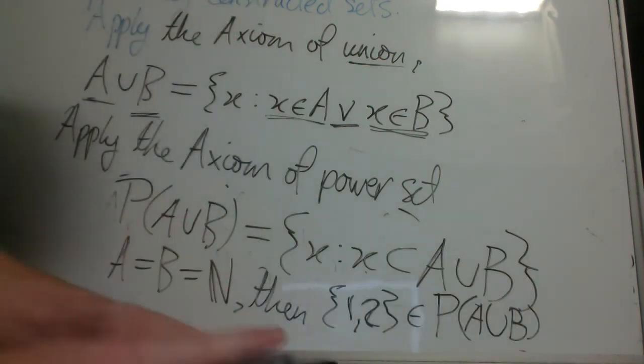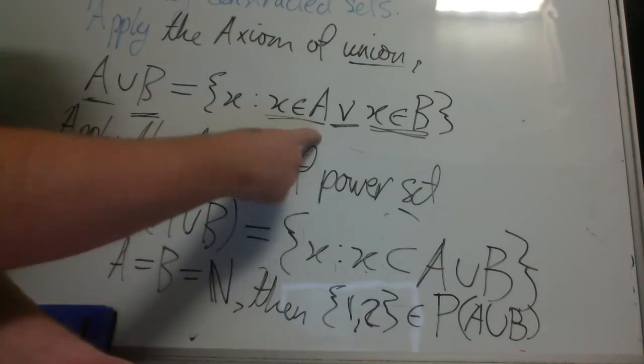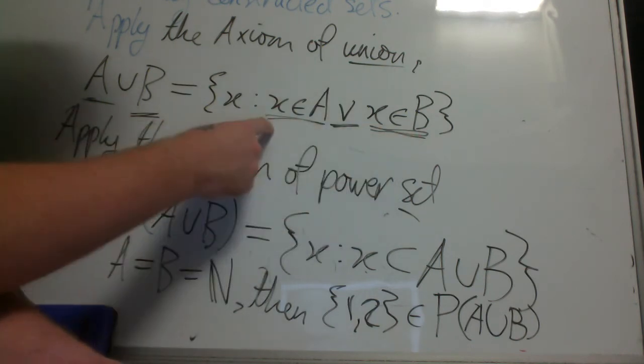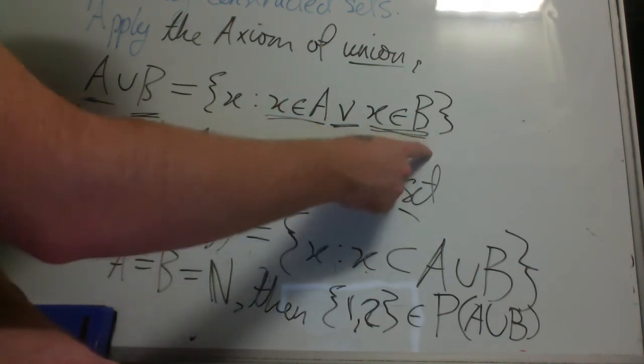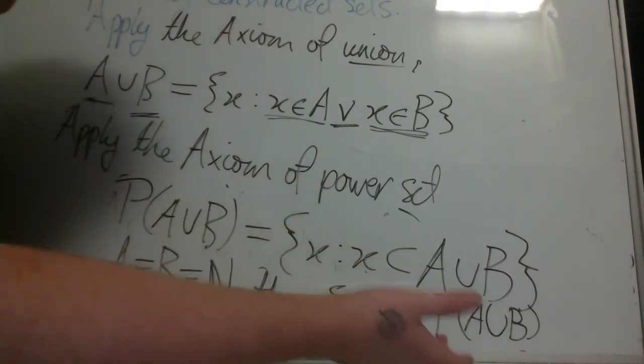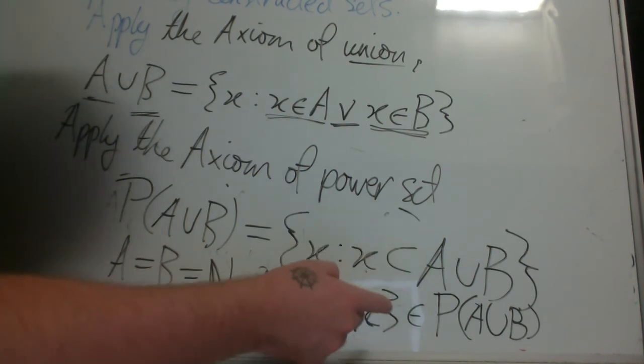Because A and B are both the natural numbers, and so x is either an element of the natural numbers or x is an element of the natural numbers. Hence, the power set will be the power set of the natural numbers. So every subset of the natural numbers will be an element of the power set.